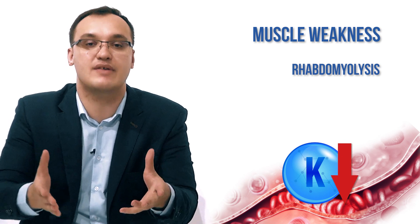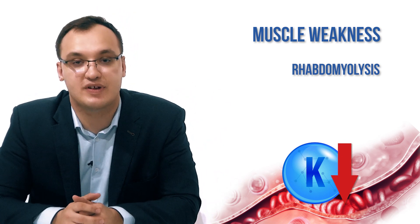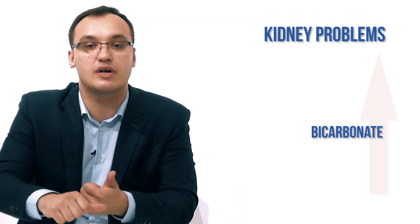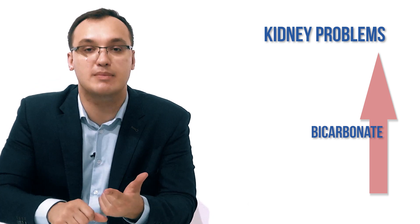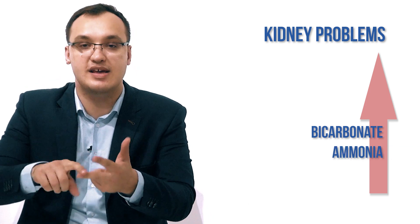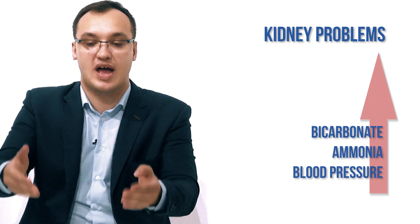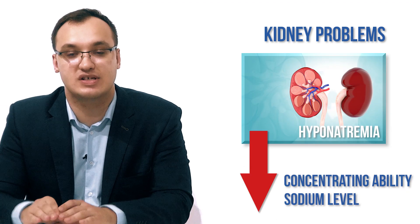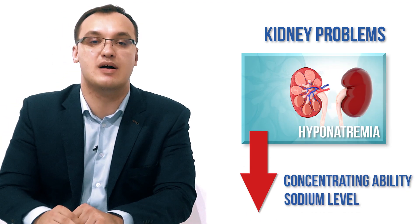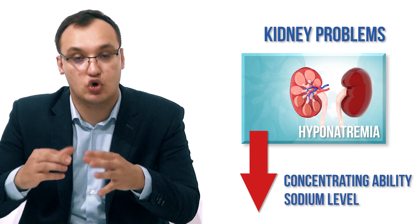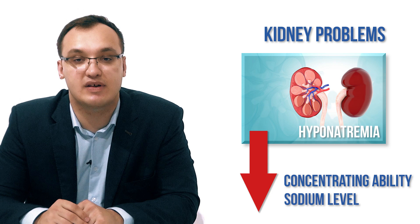In fact, these patients have a very low potassium level despite the misleading lab result. To summarize the renal problems: increased bicarbonate, increased ammonia, increased blood pressure, decreased sodium causing hyponatremia, and decreased concentrating ability of the kidneys. Thank you very much for listening.